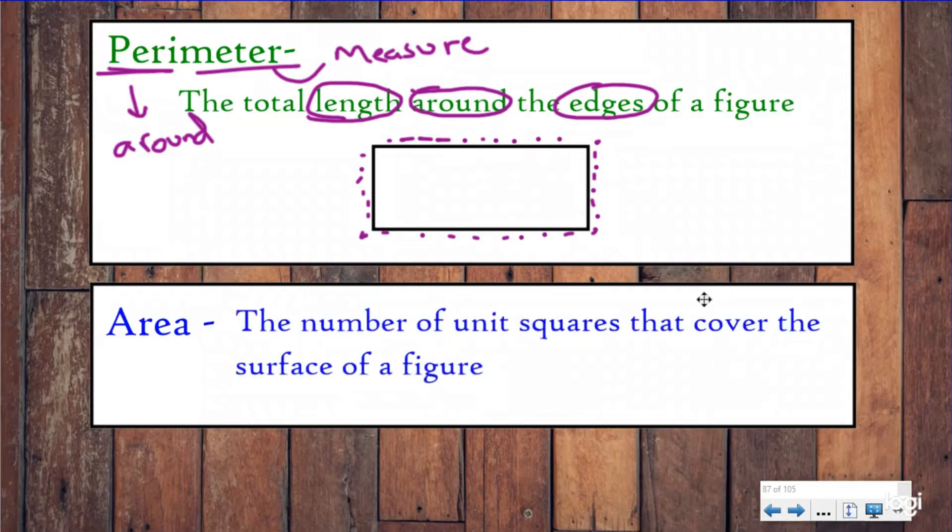For area, we're going to have the same definition we've had for every lesson of this unit, the number of unit squares that cover the surface of a figure. So we're talking about area, we're trying to cover the surface of this with square units. So perimeter is around the edges, area is covering the surface of the figure. What we're going to do today is use these together because both of these use the dimensions of our figure to help us solve for them.